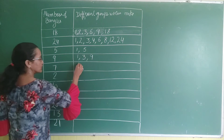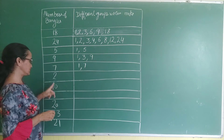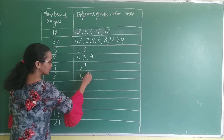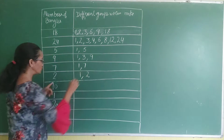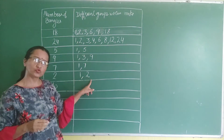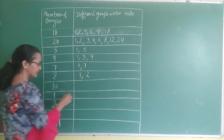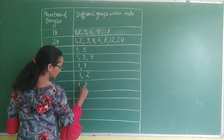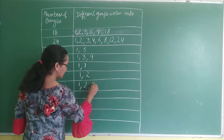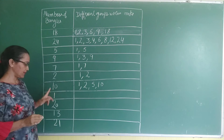Next is 7. So the factors are 1 and 7. Next is 2. For 2, the factors are 1 and 2 — 2 is in the table of 2, making one group, and 2 groups of 1. Next is 10. For 10: 1, 2 are in the table, 5 is in the table, and 10 is in the table.